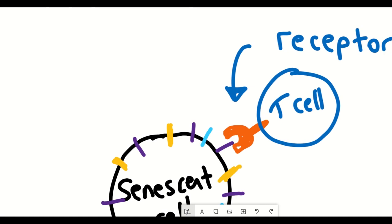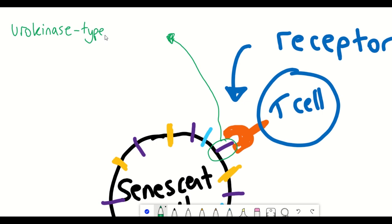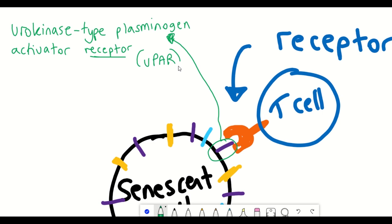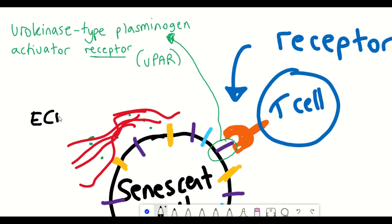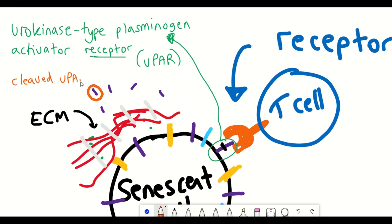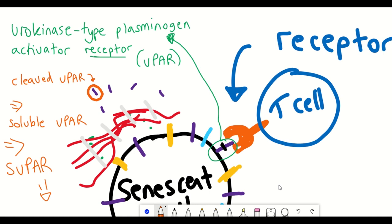The protein target they decided on was urokinase-type plasminogen activator receptor (uPAR). This protein is a receptor for urokinase-type plasminogen activator, which promotes degradation of the extracellular matrix and functions as a signalling receptor promoting cell motility. Interestingly, a portion of uPAR is cleaved during senescence to form soluble uPAR (suPAR), which is found in the plasma and can be used as a biomarker to assess the senolytic activity of the CAR T-cells.